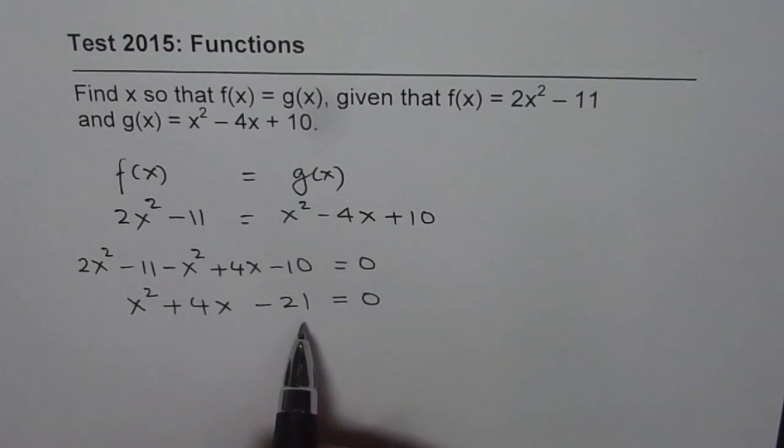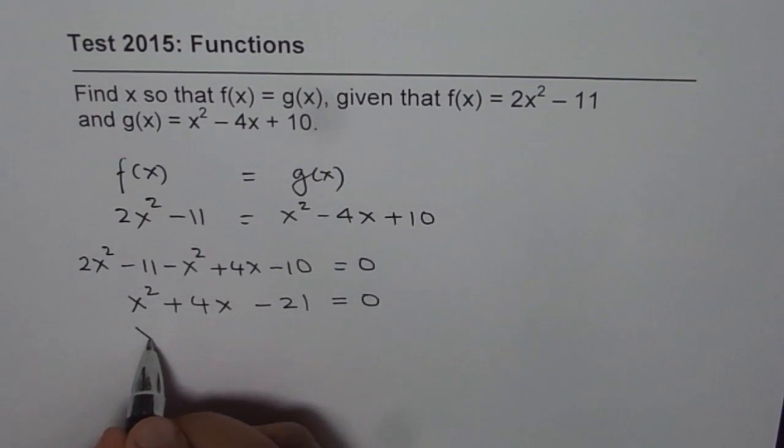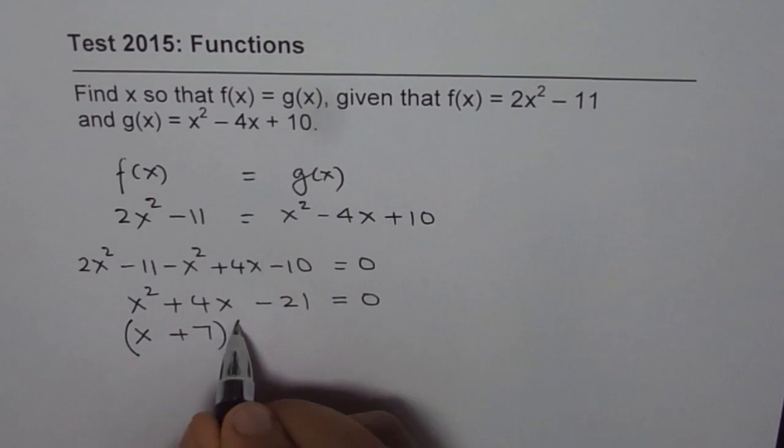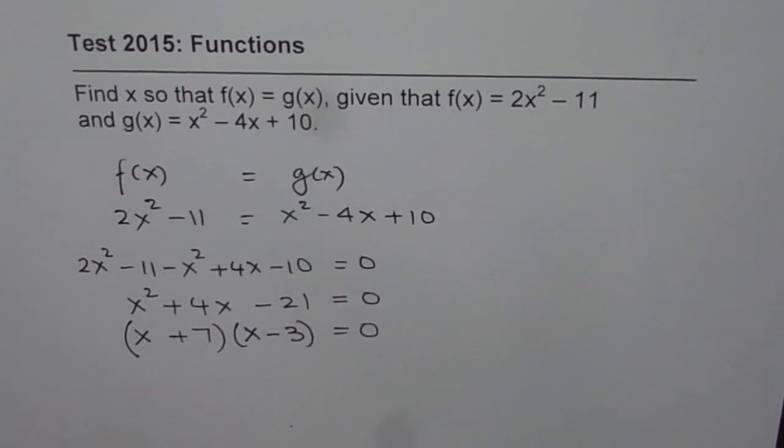Now we can factor this quadratic equation. We are looking for two numbers whose product is minus 21 and sum is plus 4. So the numbers are 7 and 3, 7 with positive sign, 3 with negative sign, so that they add up to plus 4. So we can factor this as x plus 7 times x minus 3 equals 0.